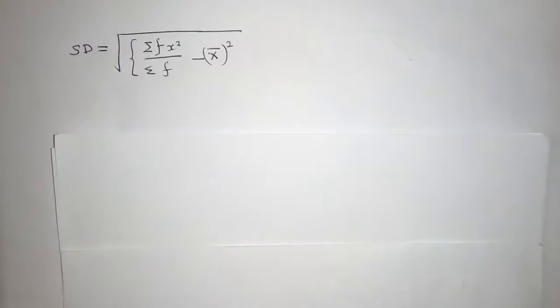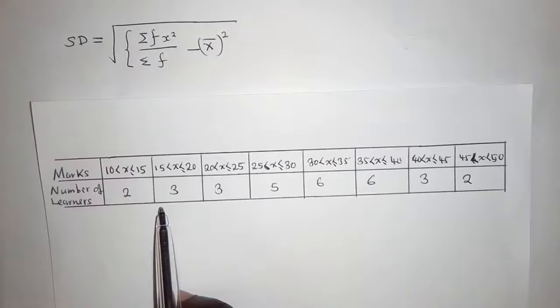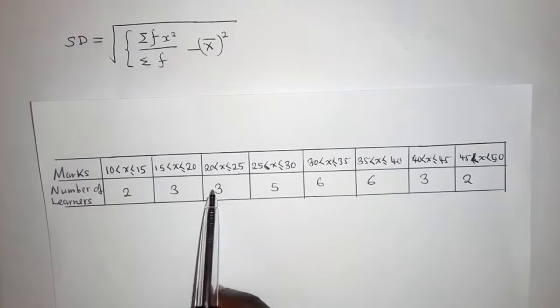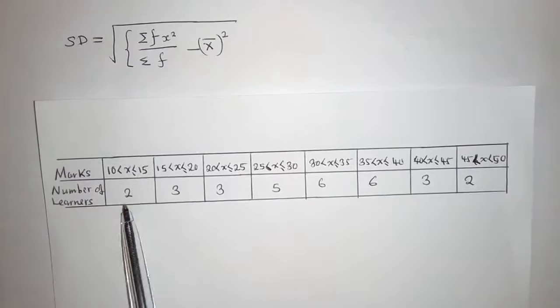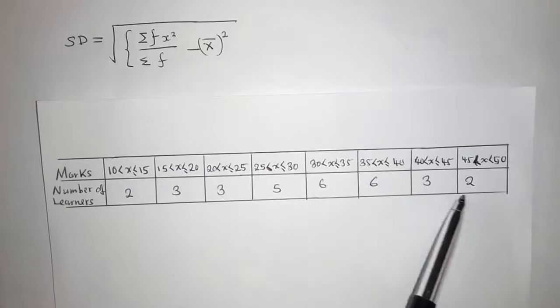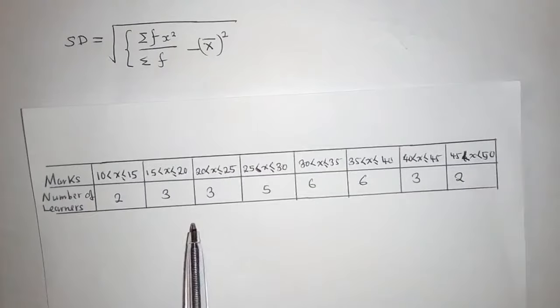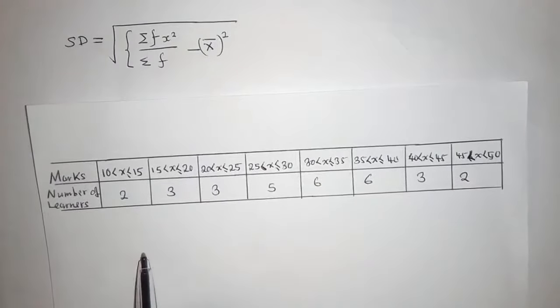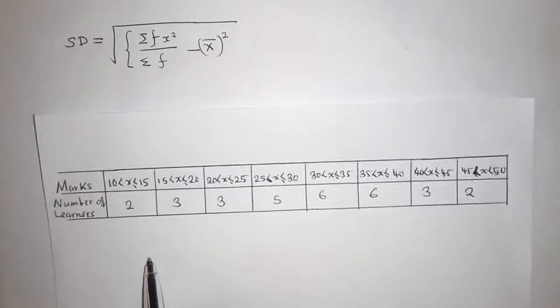Let's look at the table. The number of students involved was 30, so when we add these numbers down here, they'll give us 30. The first thing when you've been asked to find standard deviation is to first find the mean.